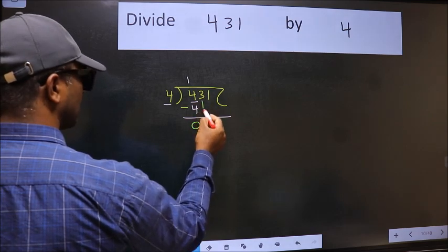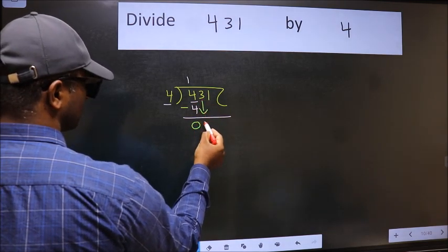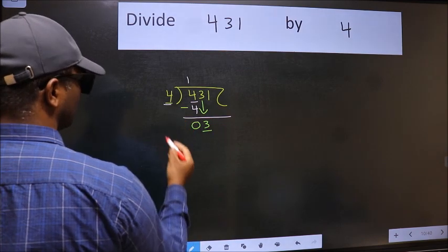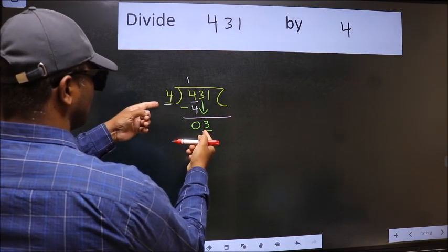After this, bring down the beside number. So, 3 down. Now, here we have 3 and here 4. 3 is smaller than 4.